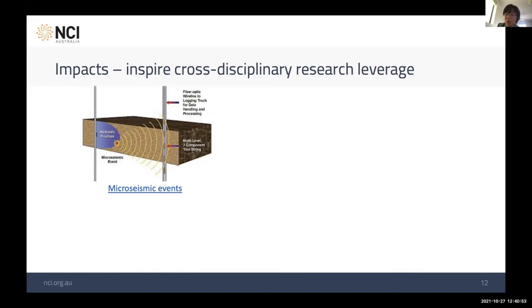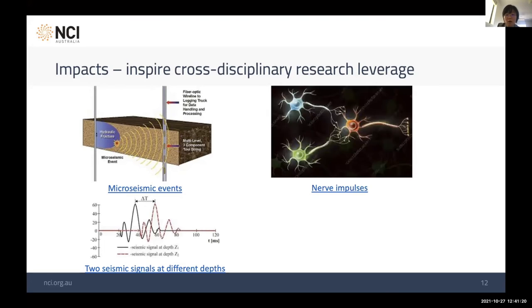The first one is signal processing. The picture here shows you an oil reservoir where high-speed fluid was injected into the well and forces the rock to open fractures. That fracture allows trapped oil to come out of the reservoir. When the fracture happens, it's actually a small earthquake, so the signal is like this—it's an impulse signal. On the right-hand side, it's a human body's nerve impulse. The signal is very similar, looks like the microseismic event.